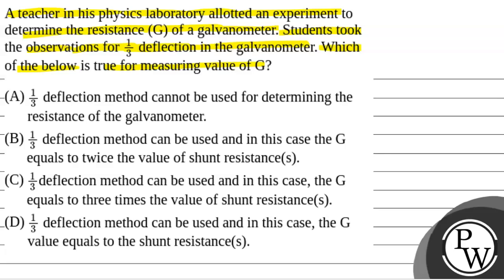We will solve this question. First, we will see the key concept. The key concept is if there is a resistance of galvanometer that is G and a shunt resistance S is connected in parallel with the galvanometer, and suppose the current flowing in the whole circuit is I and the current flowing through the galvanometer resistance is IG, then